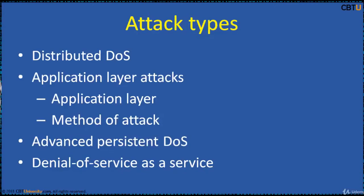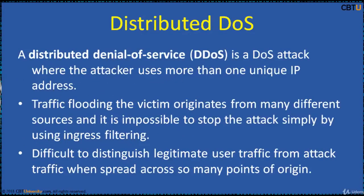Of all these, the most serious attacks are distributed. A DDoS attack is a DOS attack where the attacker uses more than one unique IP address. Traffic flooding the victim originates from many different systems and sources, making it impossible to stop the attack simply by using firewall ingress filtering. It also makes it very difficult to distinguish legitimate user traffic from attack traffic when it is spread across many points of origin. DDoS attacks may involve forging of IP source addresses — IP address spoofing — which further complicates identifying and defeating the attack.